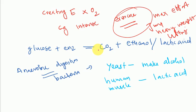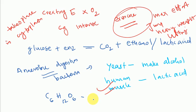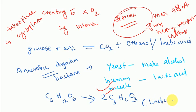Anaerobic respiration takes place in the cell cytoplasm and produces lactic acid. The chemical equation is: C6H12O6 (glucose) → 2 C3H6O3 (lactic acid).